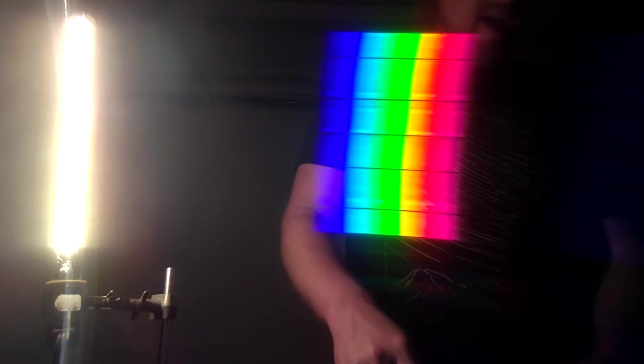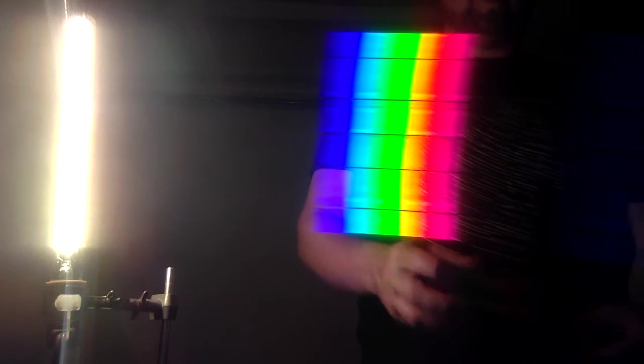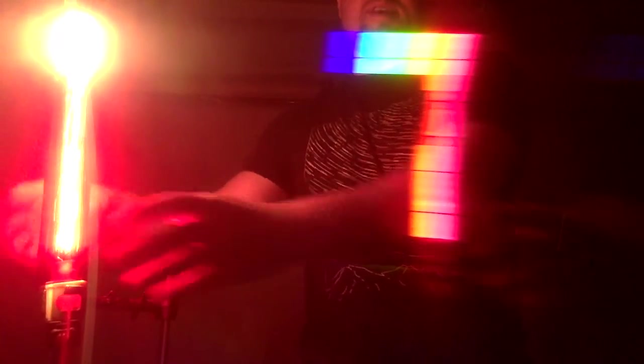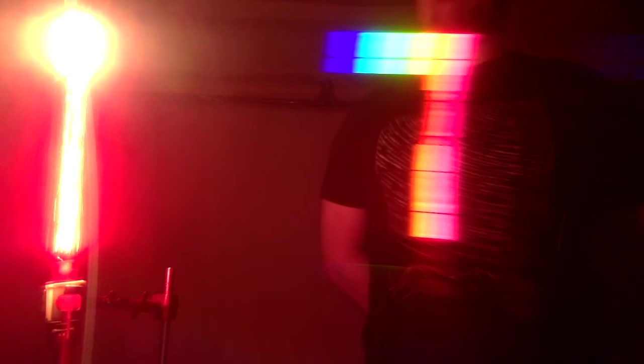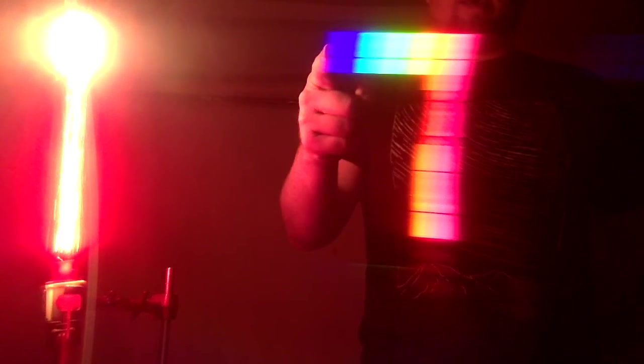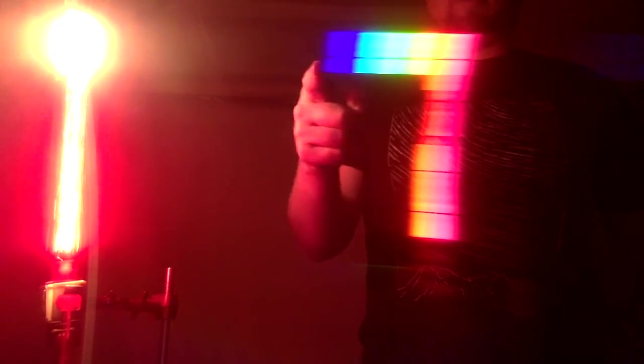Now when I put this red filter over the light bulb, we can see that it works by blocking all of the colors of light that are not red. So up here where the filter is not in the way, we can see all of those same colors that we were seeing before.